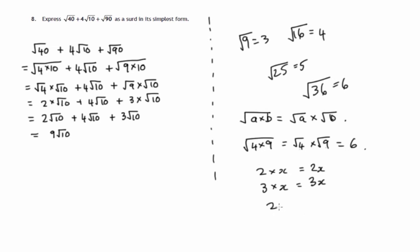It's the same as if we had 2x plus 4x plus 3x. We'd say how many x's? We've got 2 of them plus 4 of them plus 3 of them. We've got 9 of them.